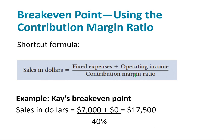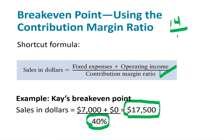A much easier way is if you know the contribution margin ratio — this gives you the break-even point in sales dollars. Kay's contribution margin was $14, the sales price was $35, giving us a 40% contribution margin ratio. The break-even point in sales dollars is $17,500. See how much easier it is to use the shortcut over the income statement approach.